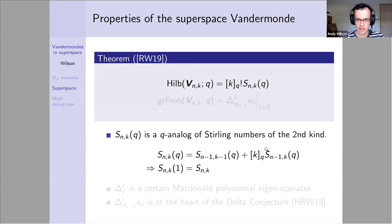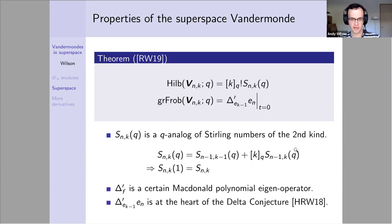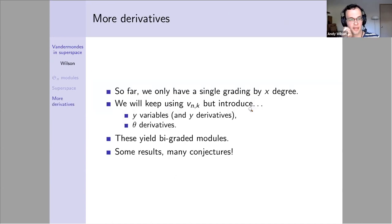I'm going to look at the span of all the x derivatives applied iteratively to the anti-symmetrized version of this monomial. The result is graded by x degree. Our main theorem is on this slide. First, the Hilbert series is given by a q-analog of the number of ordered set partitions into k blocks, or the number of surjections from n elements to k elements. We have the q-analog of k factorial times a q-analog of Stirling numbers of the second kind. The graded Frobenius series is obtained by taking this delta prime operator applied to e_n. This comes from the delta conjecture as Sean mentioned earlier. You set t to zero, and you get this graded Frobenius series.